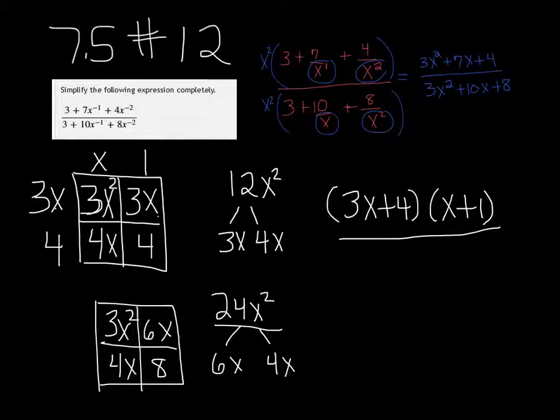So factor out the GCF at the top, and that's 3x, and it leaves you with an x and a 2. The GCF at the bottom would be 4. Just make sure that if you multiply everything out, it works out. And we get 3x plus 4, and x plus 2.